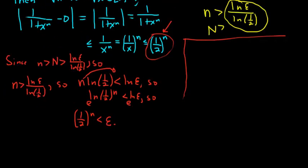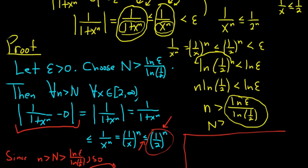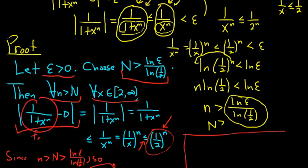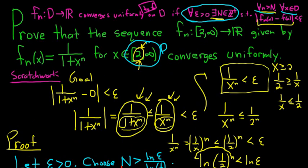So to recap: one over one plus x to the n minus zero is less than or equal to one half to the n, which is less than epsilon. That completes the proof. We showed uniform convergence — we started with epsilon greater than zero, found a natural number N such that for all little n bigger than N and for all x in the interval, the distance between f sub n of x and the limit function zero is less than epsilon. I hope this was helpful!